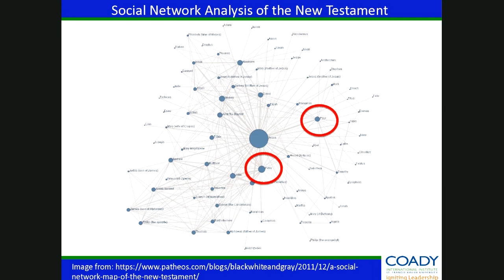Here is a social network map based on the New Testament's description of relationships. The central and largest node is Jesus. The two nodes circled are Peter and Paul — Paul is in the upper right circled in red. Paul is considered the most important person after Jesus in the history of Christianity and is credited with writing the largest number of books in the New Testament. But his node is actually smaller than Peter's and about the same size as John the Baptist, which speaks to Peter's more central role in early church leadership.